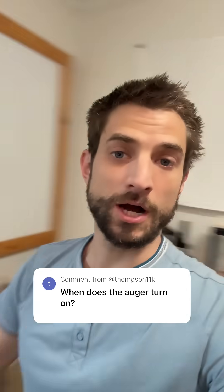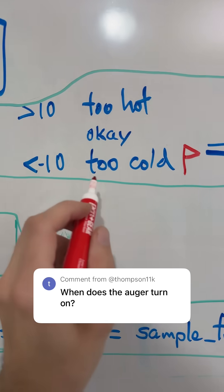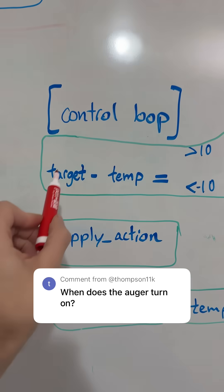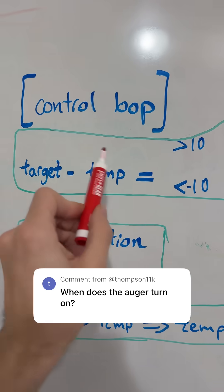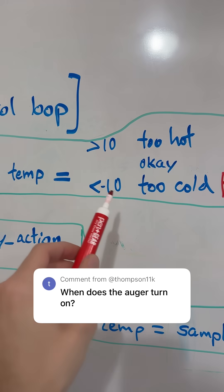When does the flag go up? That goes up when the temperature is too cold. The temperature is too cold when the target temperature minus the latest measurement of the temperature is below a threshold in the PID loop, the control loop.